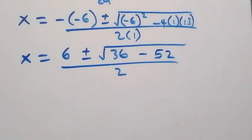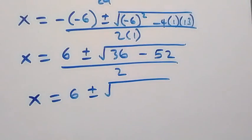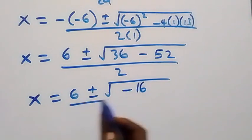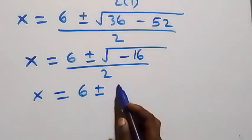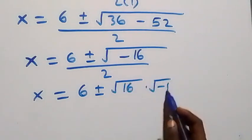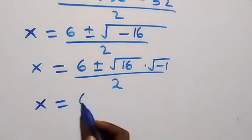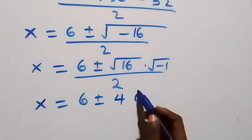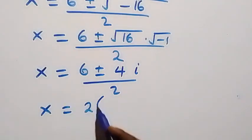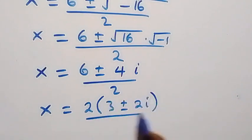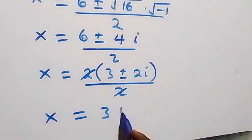So x equals [6 plus or minus the square root of minus 16] over 2. The square root of minus 16 equals 4i. This gives x equals (6 plus or minus 4i) over 2, and since 2 is common, x equals 3 plus or minus 2i. These are two complex solutions.